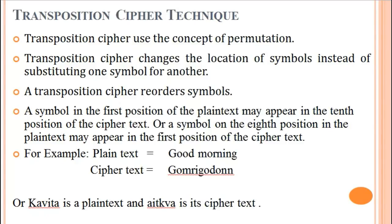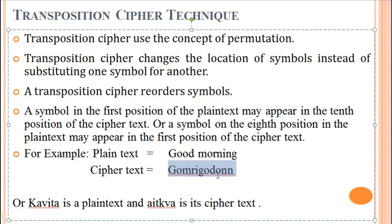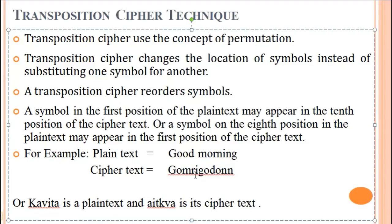A symbol in the first position of the plain text may appear in the tenth position of the cipher text. Or a symbol in the eighth position in the plain text may appear in the first position of the cipher text. For example, plain text is 'good morning,' then cipher text is Z-O-M-R-I-Z-O-D-O-N-N. If anybody is monitoring our communication, they receive this message and cannot understand what the actual message sent by the sender is. Only an authorized person can convert this message back into 'good morning,' because the key used by the sender is known only to the receiver.